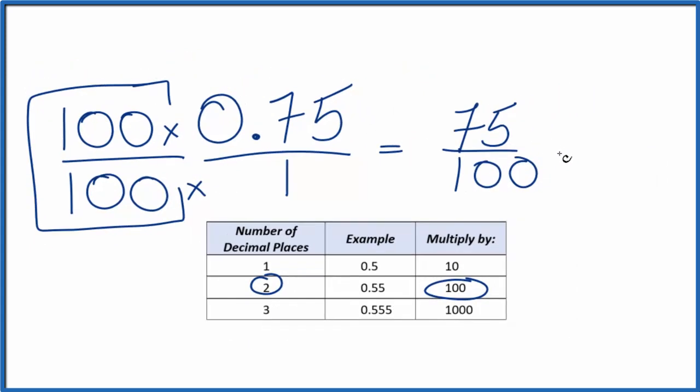25 goes into 75 three times, and 25 goes into 100 four times. So our fraction, 3 fourths, that's equal to 0.75. They are the same quantity, just written in a different format.